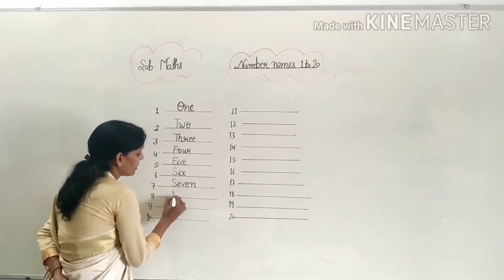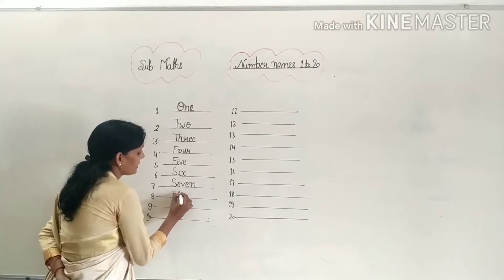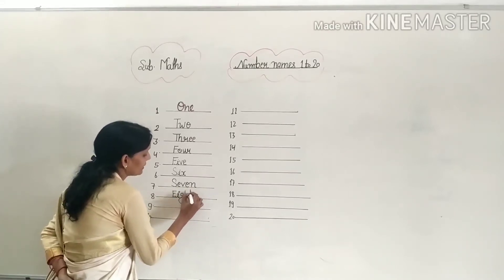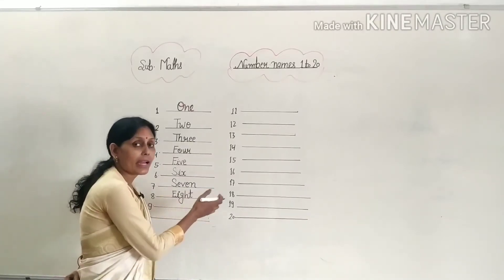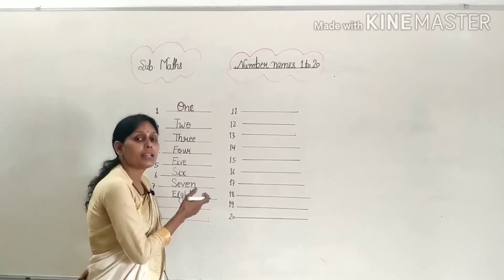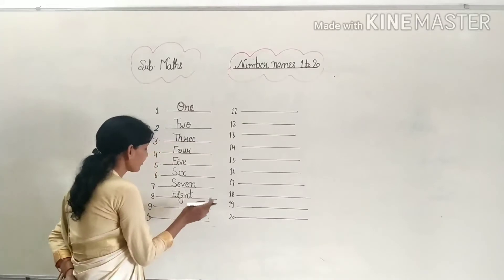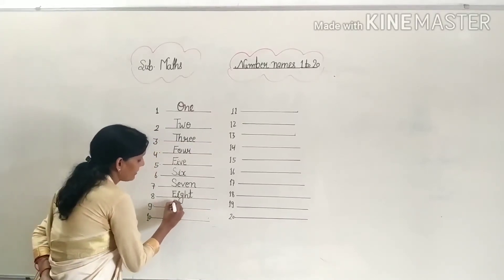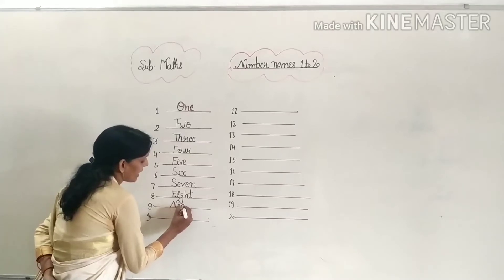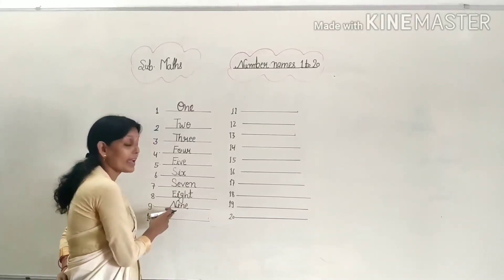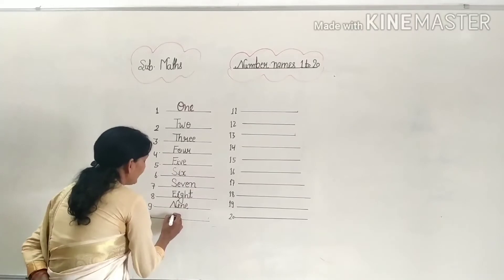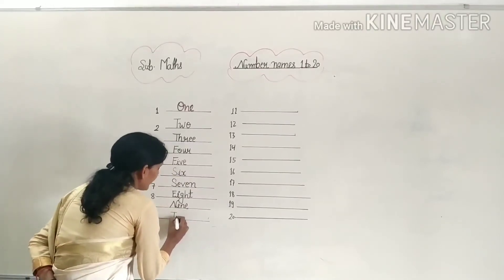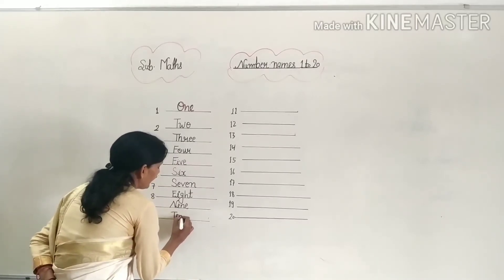And next, 8: E-I-G-H-T, 8. Spelling of 8: E-I-G-H-T. Then 9: N-I-N-E, 9. The spelling of 9 is N-I-N-E. And then 10: T-E-N, 10.